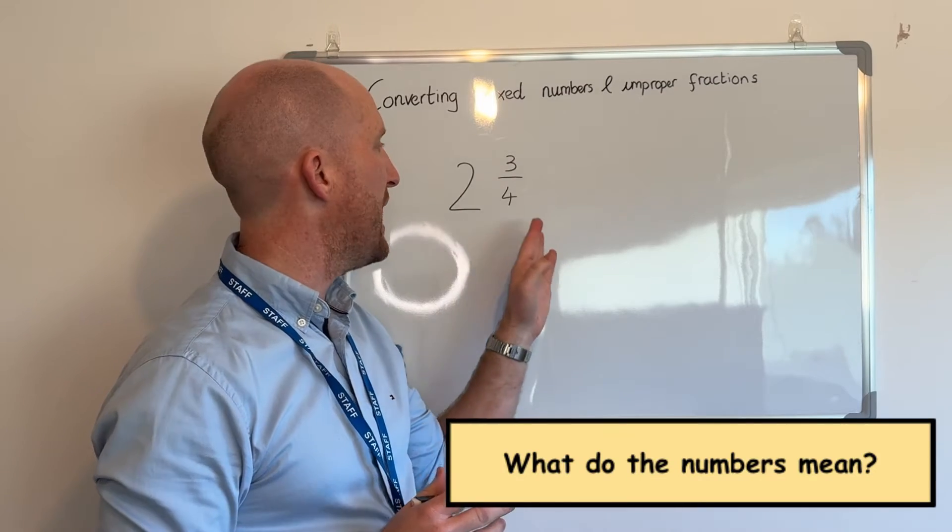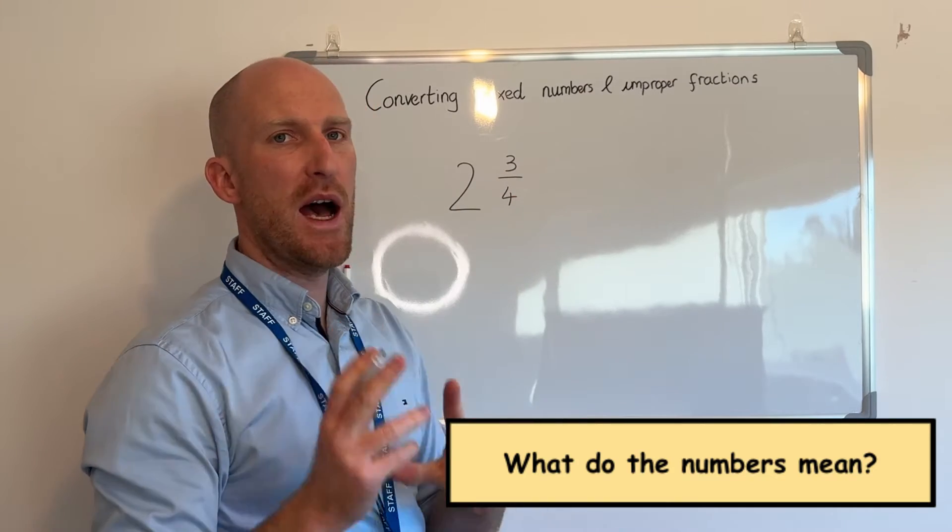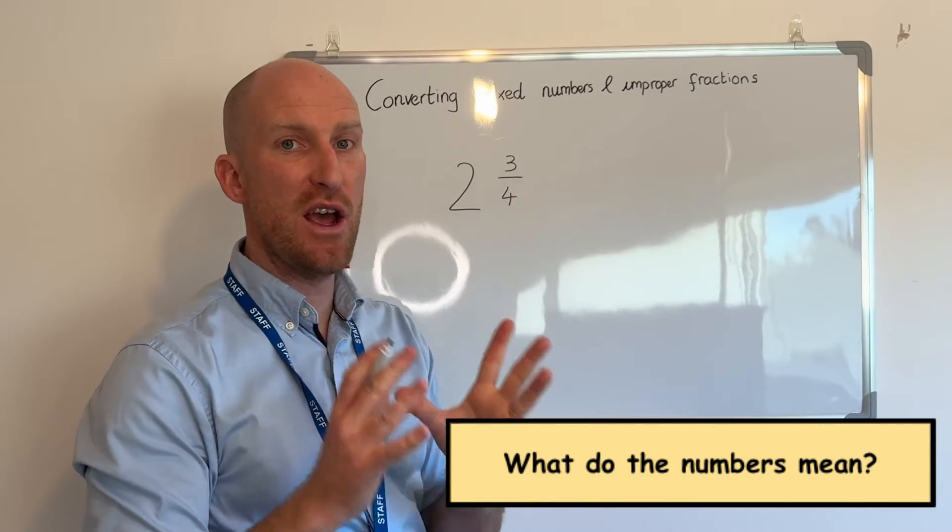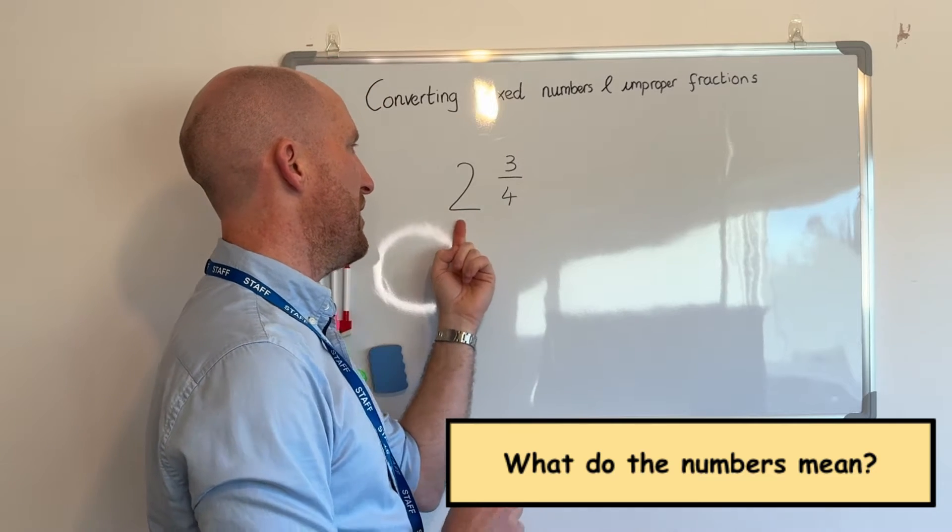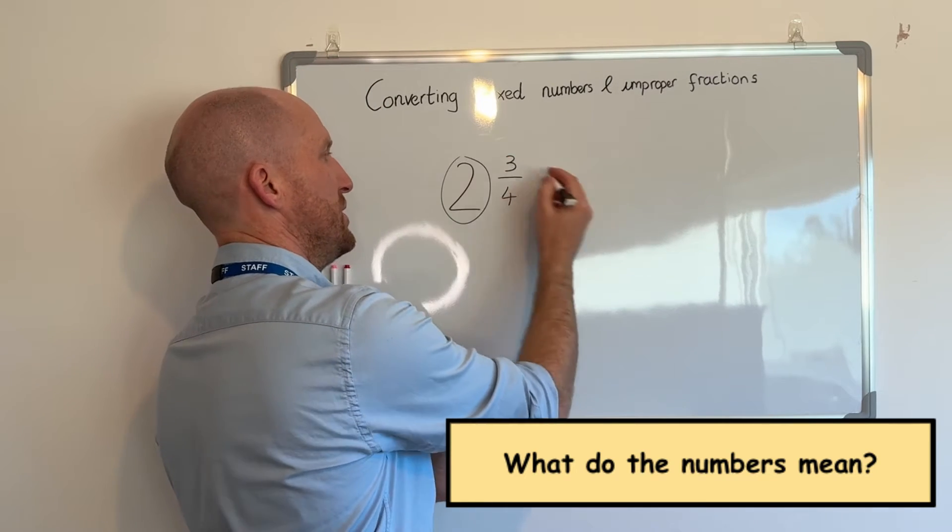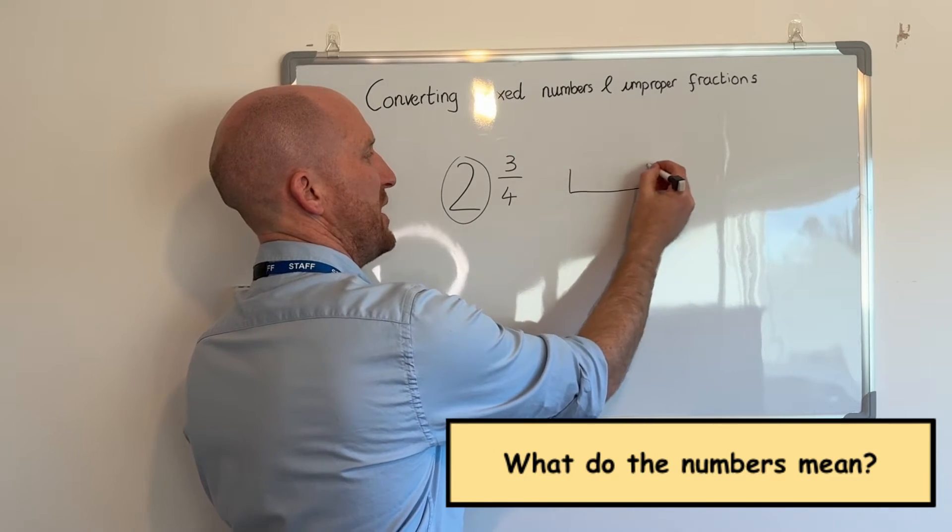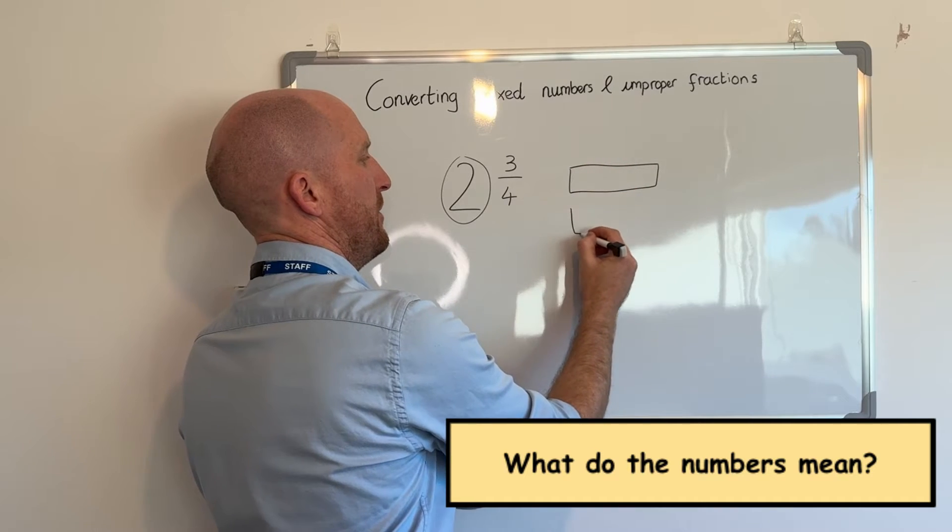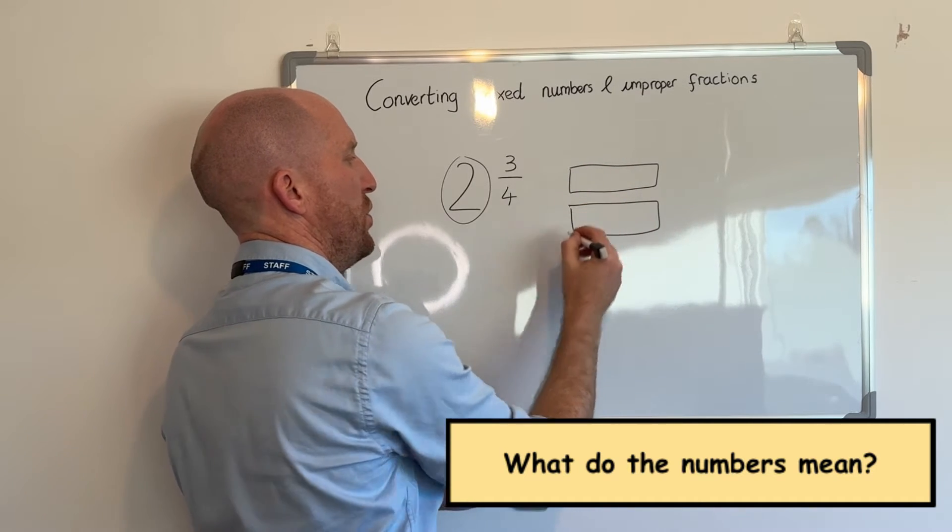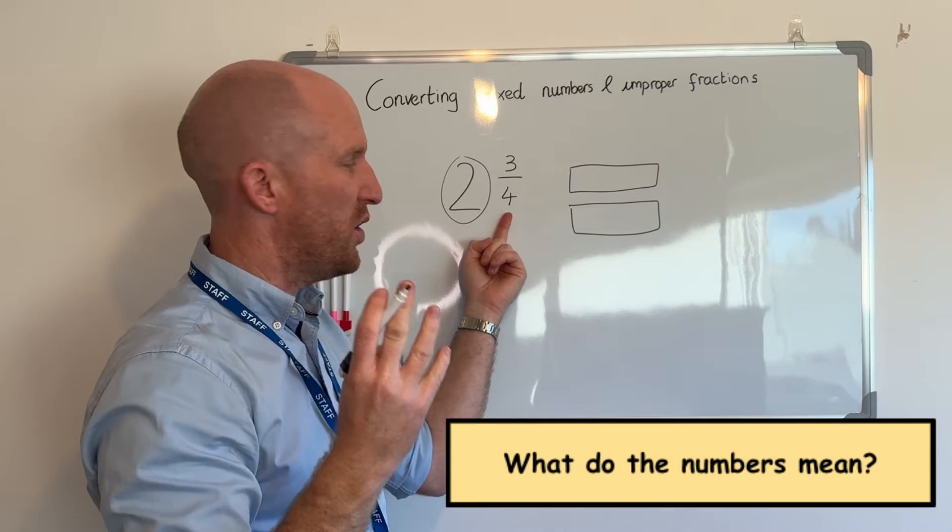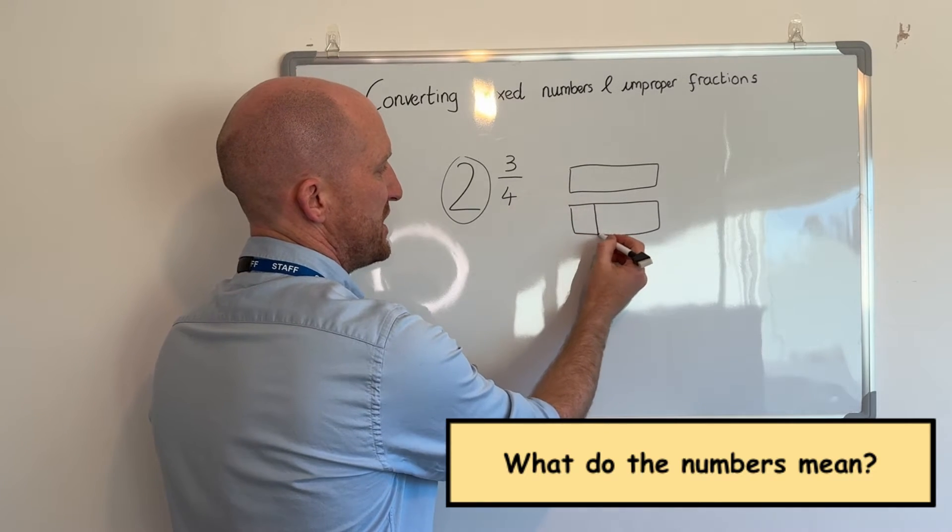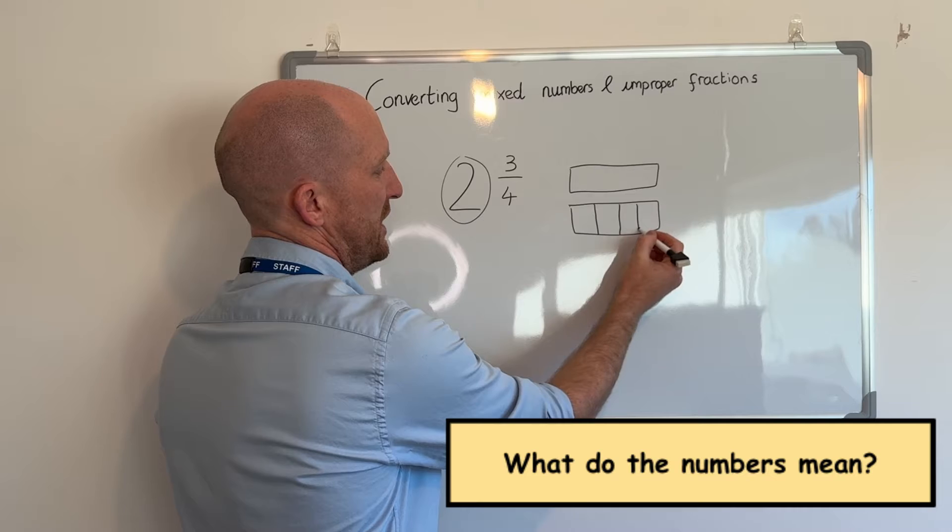Here we have two and three quarters. So remember the large number shows us how many wholes we have. So here I have two whole ones. I'm going to draw using pictures again. So I have two whole ones.